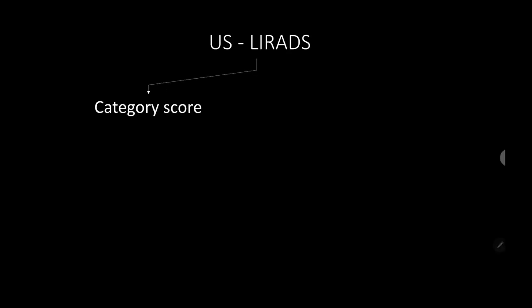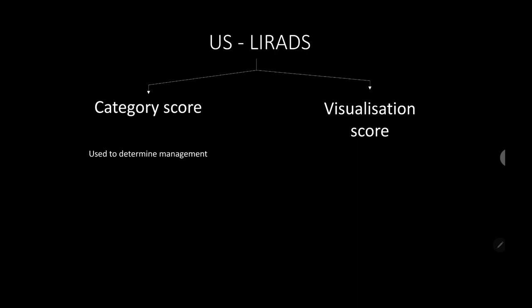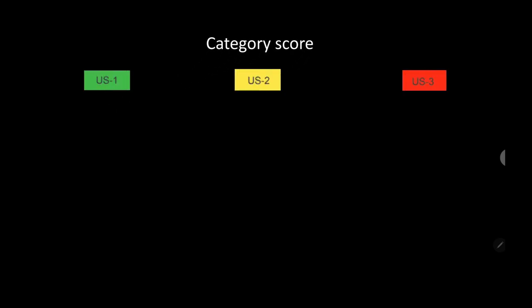The first modality, ultrasound, is used for screening. It has two scores: the category score and the visualization score. The category score is used to determine management, while the visualization score is analogous to the breast density score seen in BIRADS. The category score is divided into three categories: one (negative), two (sub-threshold), and three (positive).